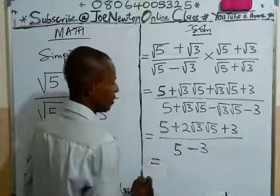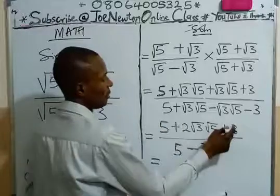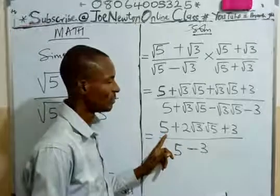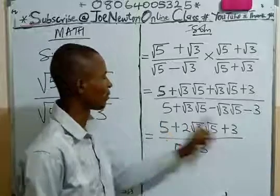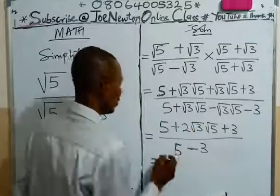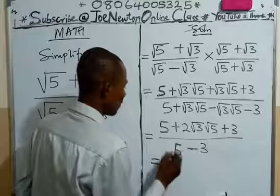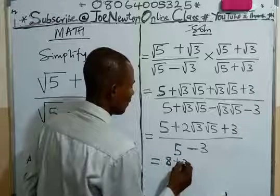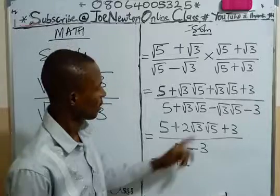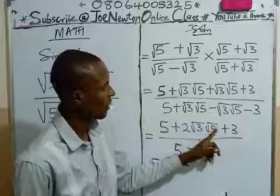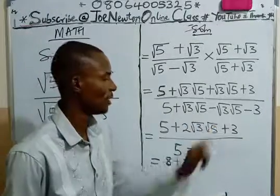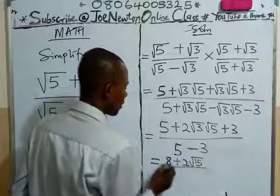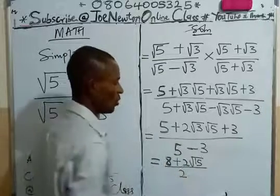So we have 8 + 2√15, all over 2. Looking at this, √3 times √5 gives √15, because 3 times 5 is 15 and they are in surds. So we have 8 + 2√15 all over 5 - 3, which is 2. So this is what we have.